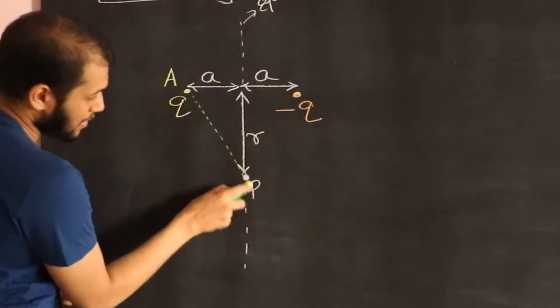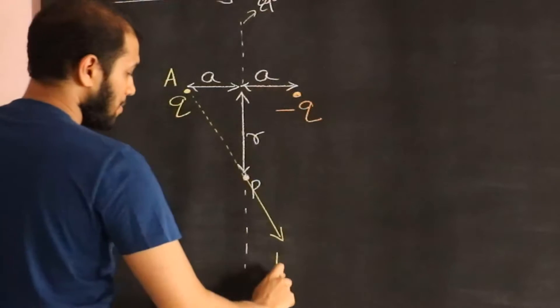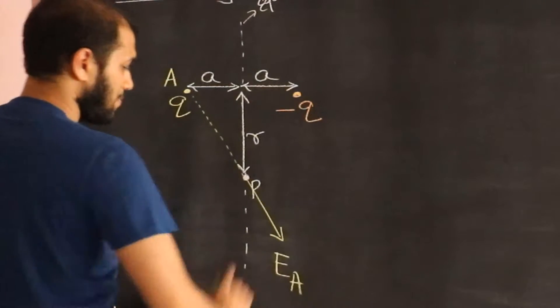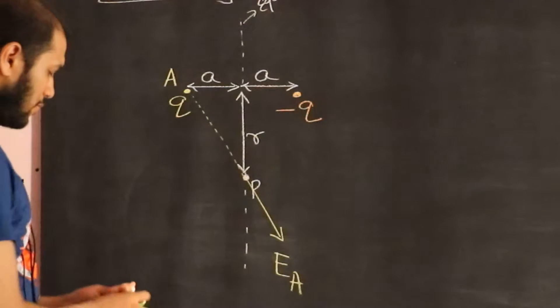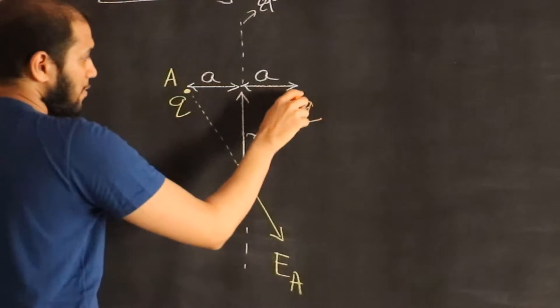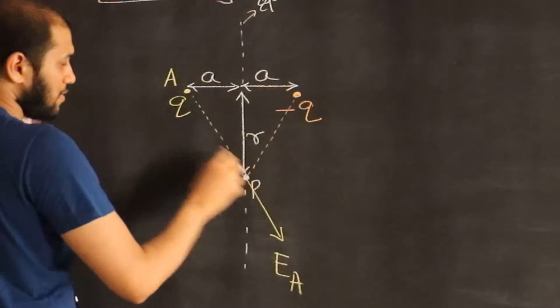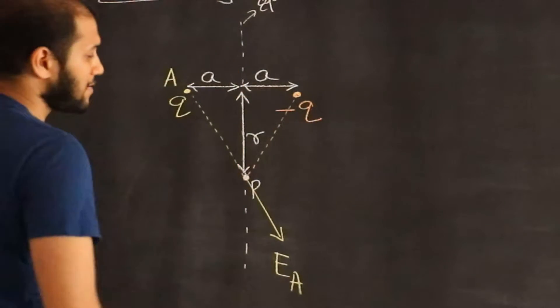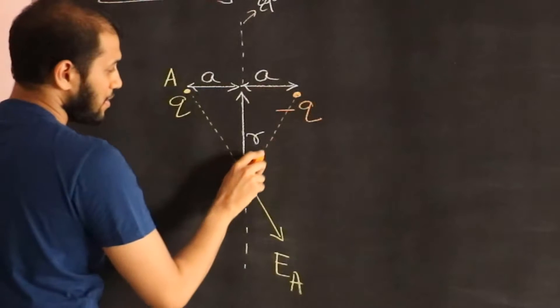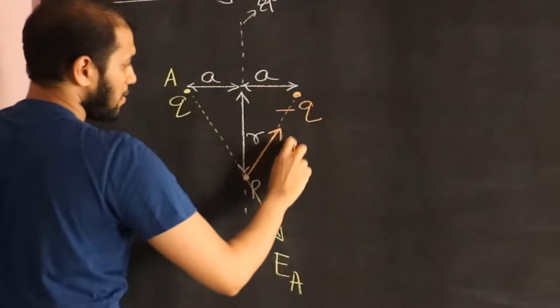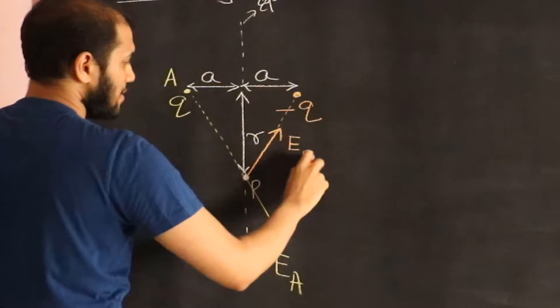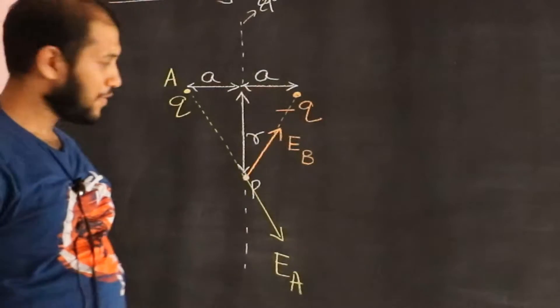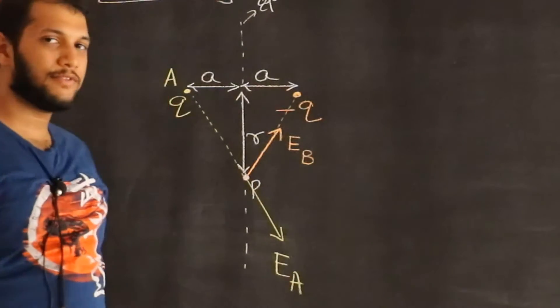Let me call this EA. Then we are going to calculate the electric field due to the negative charge. It's going to be along this line again. Since it's a negative charge, it sucks the electric field, so the electric field will be in this direction. Let me call that electric field EB.